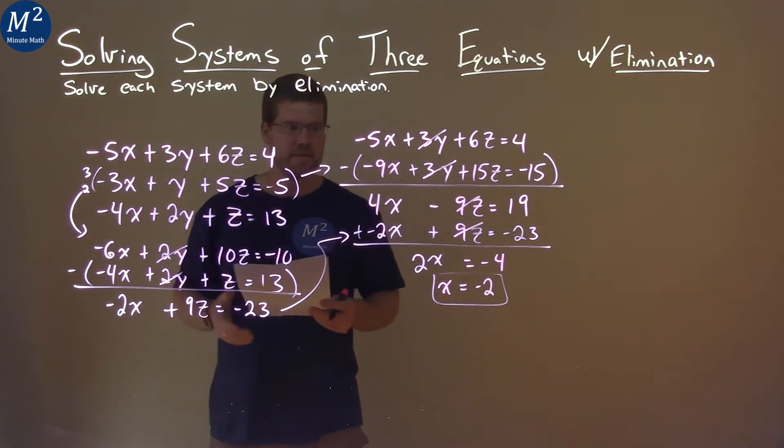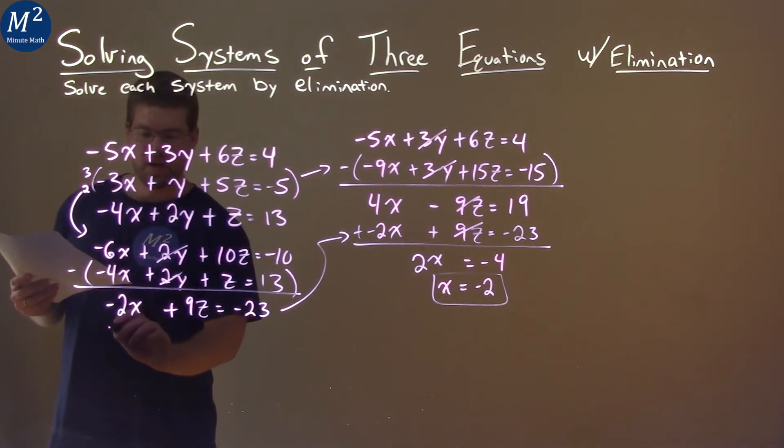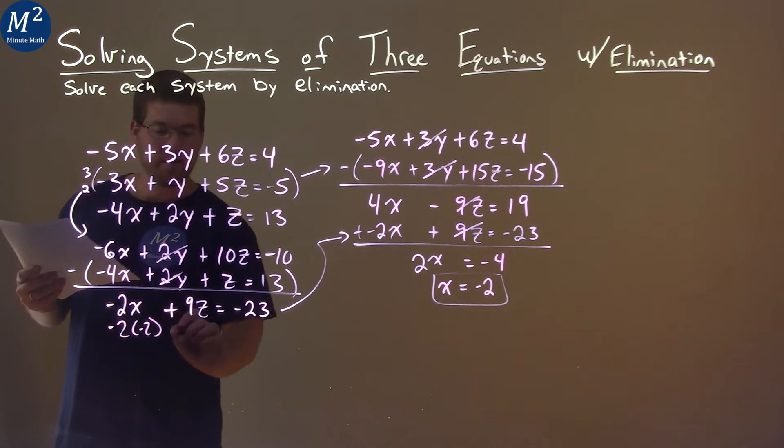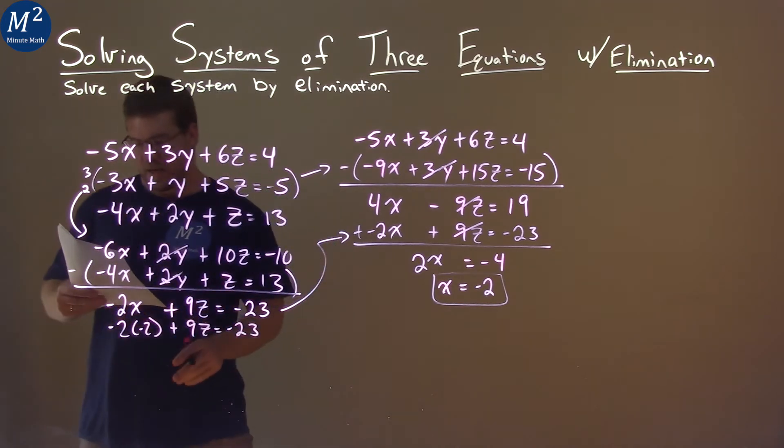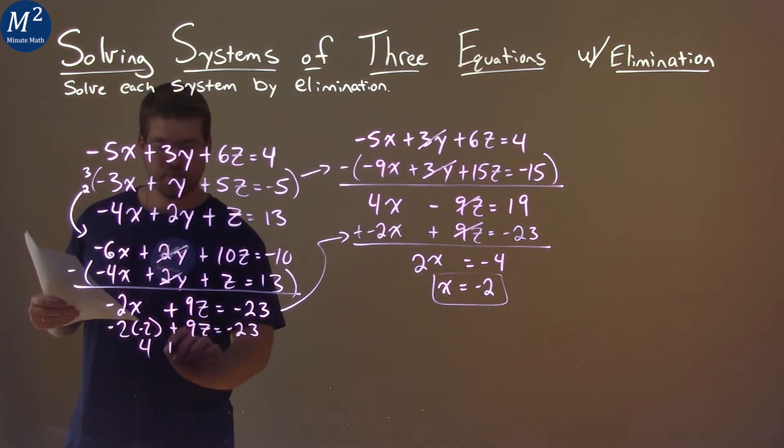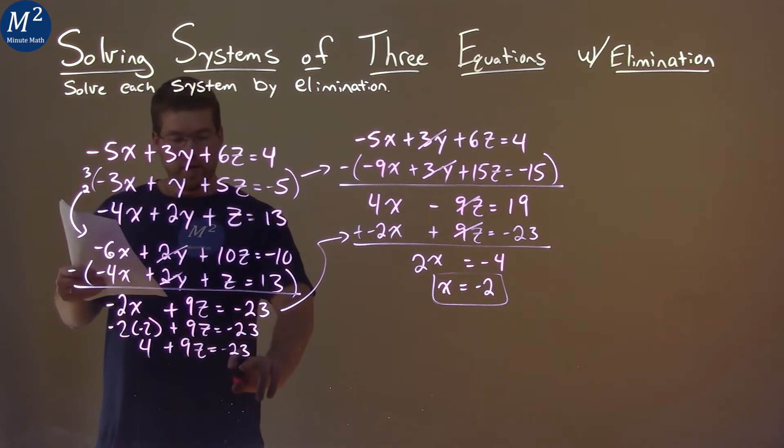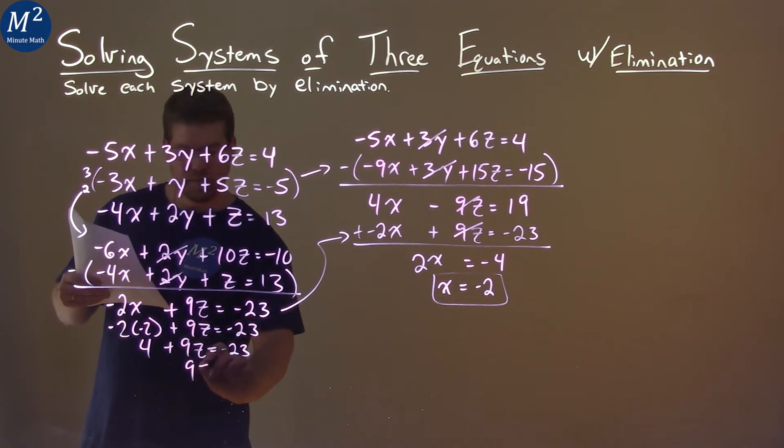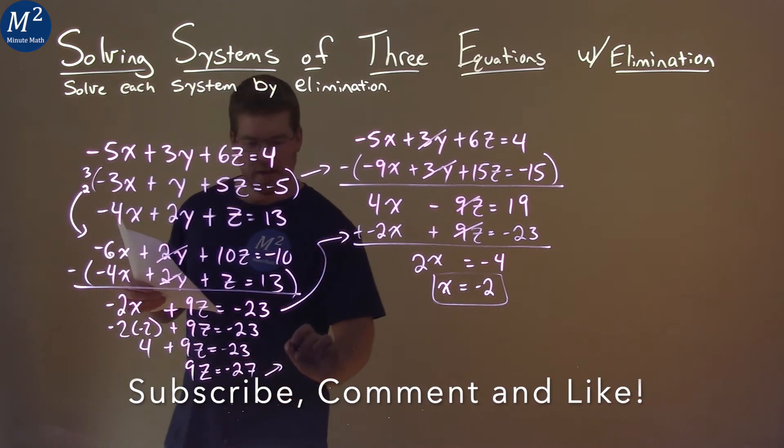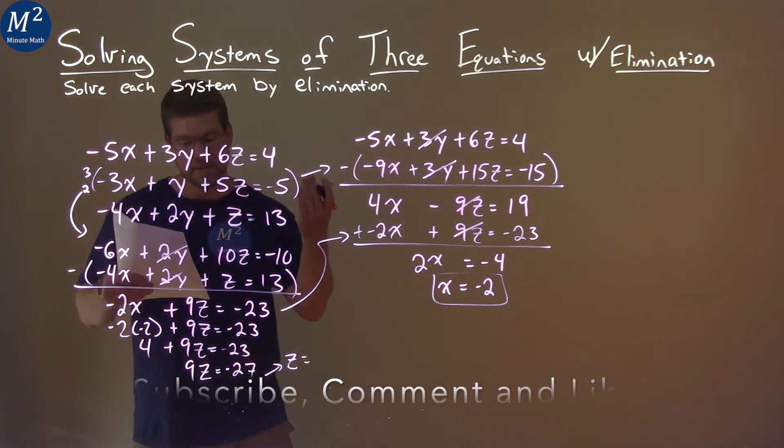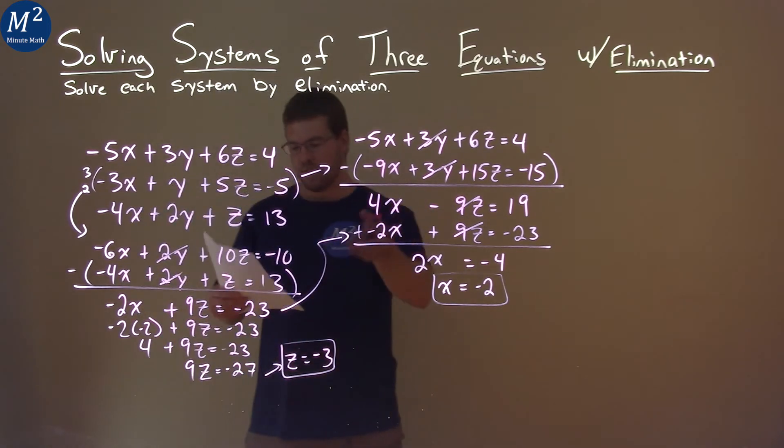So where can we use that? Well, in this equation right here, we just plug negative 2 in for x, and we can solve for z. So negative 2 times negative 2, plug it in for x, plus 9z equals negative 23. And now we can solve for z. Negative 2 times negative 2 is a positive 4, plus 9z equals negative 23. We bring the 4 over here, subtract 4 from both sides, and 9z equals negative 27. Divide both sides by 9, and z equals negative 27 divided by 9, which is negative 3.